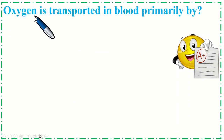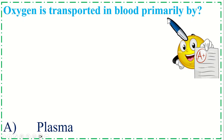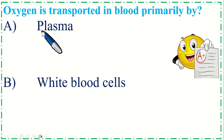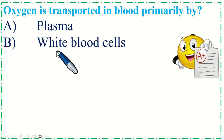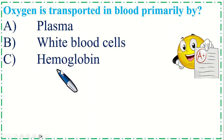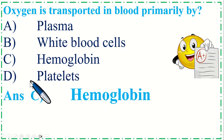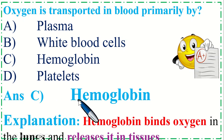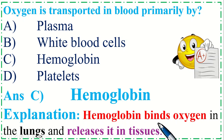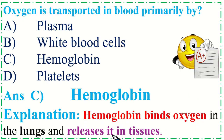Oxygen is transported in blood primarily by: Option A: Plasma, B: White blood cells, C: Hemoglobin, and Option D: Platelets. The correct option is C, Hemoglobin. Hemoglobin binds oxygen in the lungs and releases it in tissues.